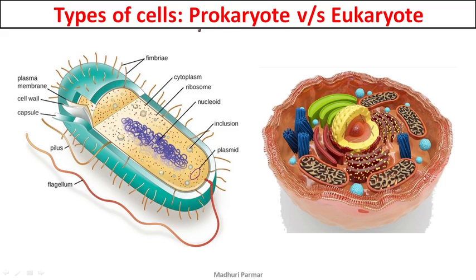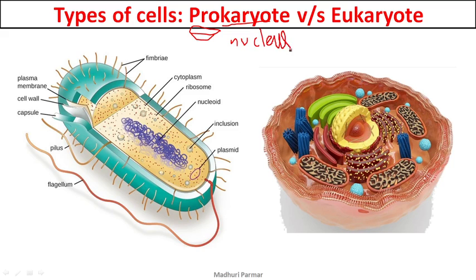Wherever you hear the term 'pro', it means first. So, prokaryote — 'karyo' means nucleus. You have heard this term especially in cell cycle and cell division — karyokinesis. Wherever you hear the term 'karyo', it means nucleus. So, prokaryote means before nucleus was properly formed. These cells do not have a proper nucleus.